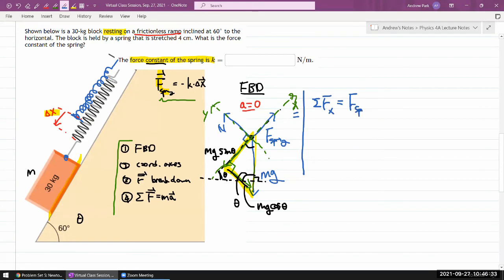So spring force minus mg sine theta is equal to zero. That's what we are talking about - acceleration is zero, so net force is just going to add up to zero in both dimensions. Net force in y direction: I have normal force and mg cosine theta, minus mg cosine theta, so again equal to zero.